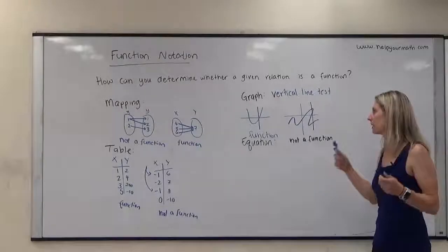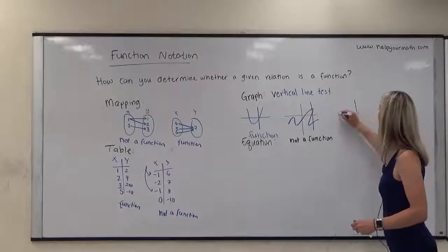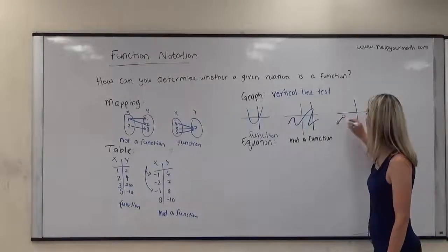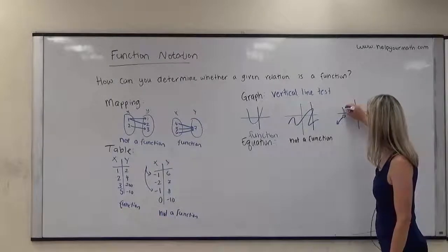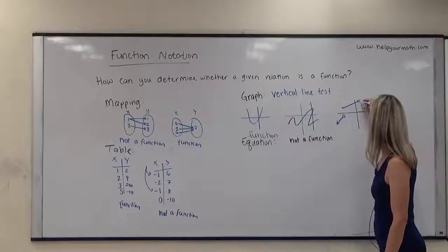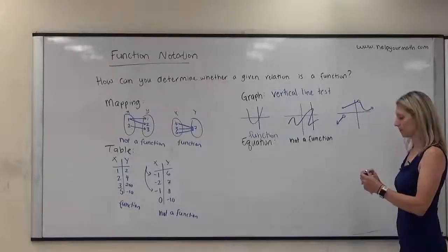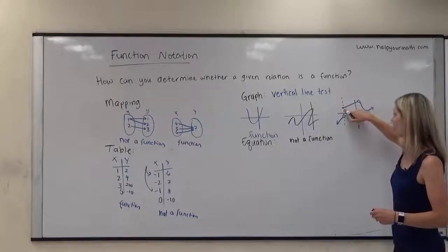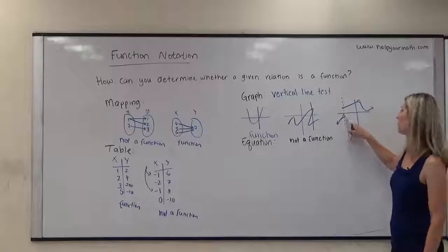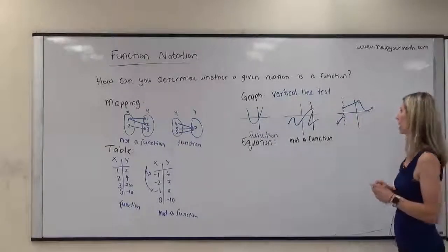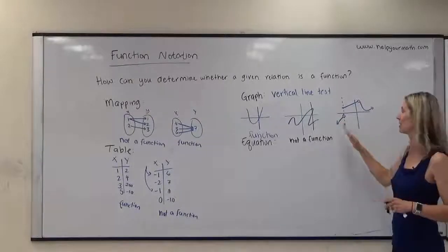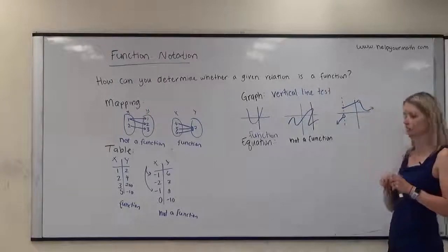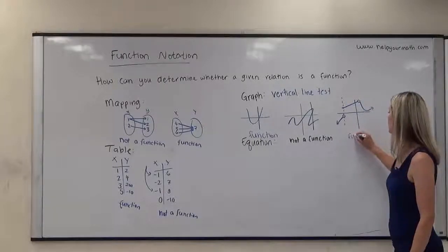Another one to be careful of: sometimes we can get a little fancy and have graphs with open and closed circles. I might have an open circle with a ray pointing one direction, a closed circle with a line segment, and then an open circle. If I draw a vertical line at that point, the closed circle indicates it's passing through the graph there, but the open circle indicates it is not crossing through the graph there. So this particular relation is a function — it does pass the vertical line test, because the open circle technically isn't part of the graph.